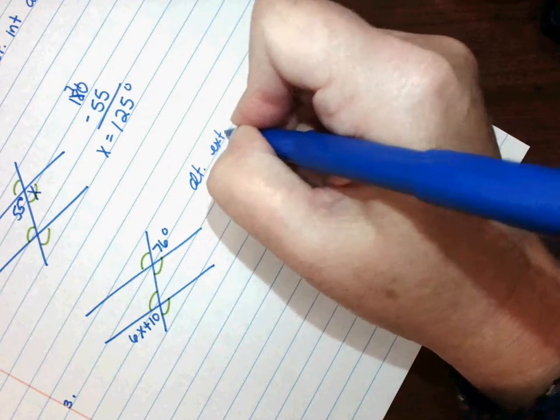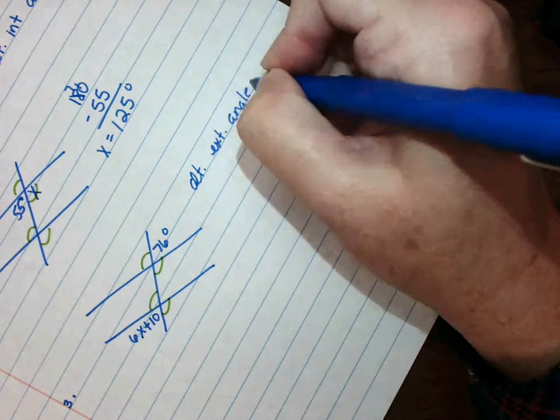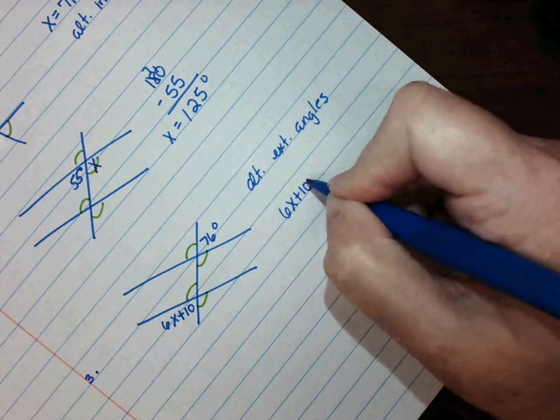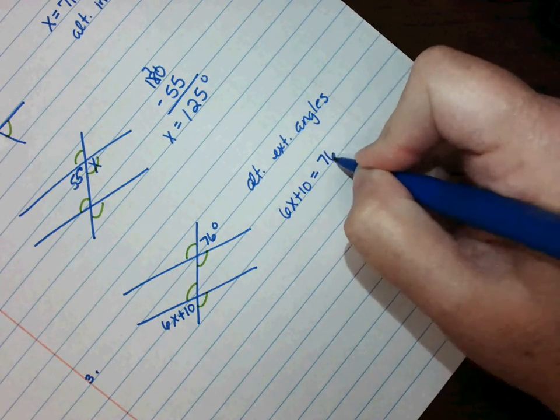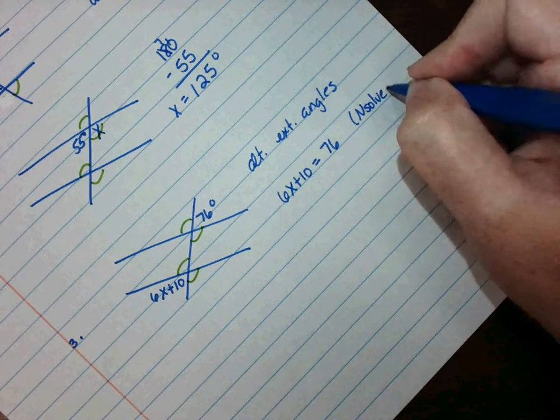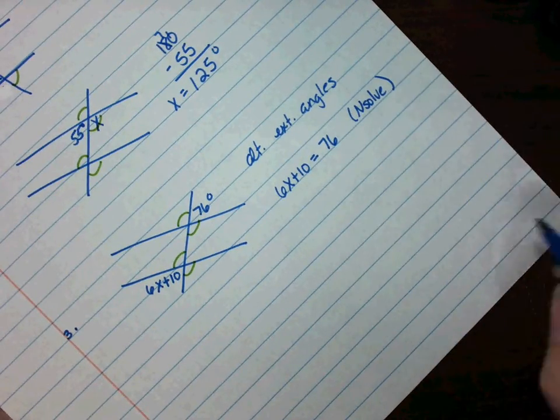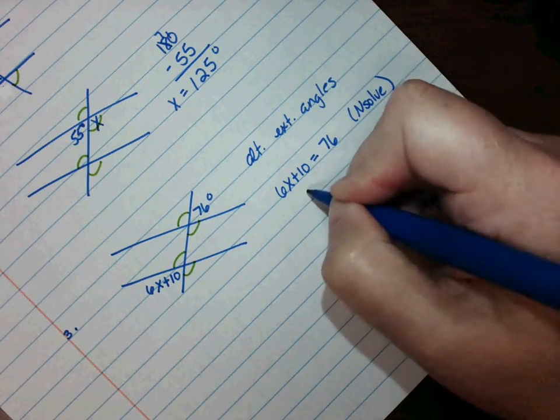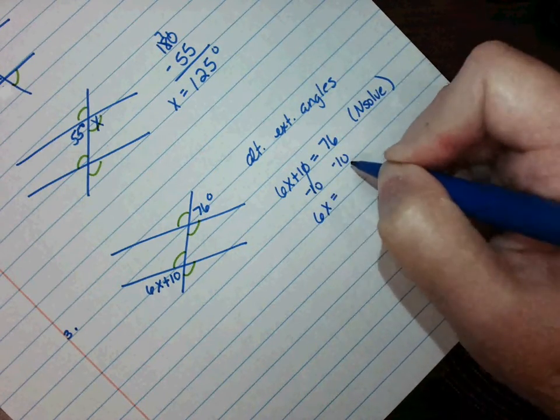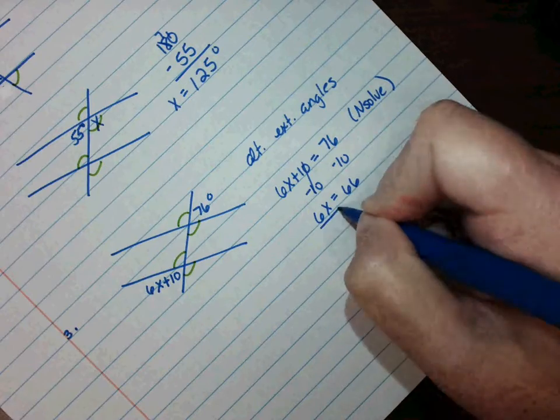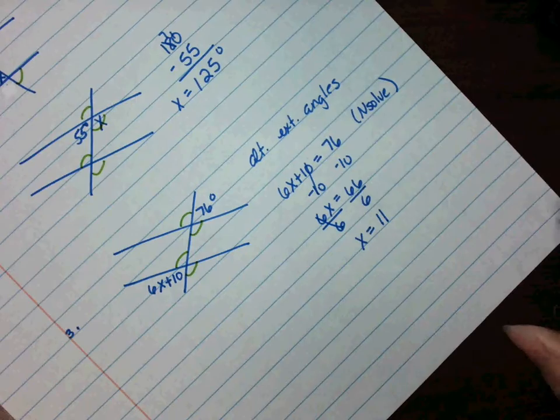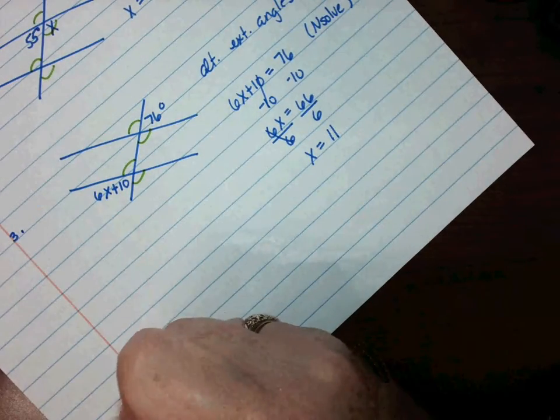So that means they're equal. That means I need to set it up like this: 6x plus 10 has to equal 76 degrees. Now you can solve this with a calculator, or if you don't have a calculator you could solve it by hand. The opposite of plus 10 is minus 10, so 6x would equal 66, and then divide by 6 and you get x equals 11.